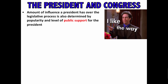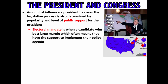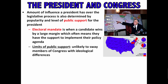Higher approval ratings mean members of Congress are more likely to go along with the president's agenda. An electoral mandate is when a candidate wins by a large margin, which often means they have the support to implement their policy agenda — for example, FDR easily defeated Hoover in 1932 and was able to get a lot done, especially during those first 100 days. However, even if a president is enormously popular, they are unlikely to sway members of Congress with strong ideological differences.